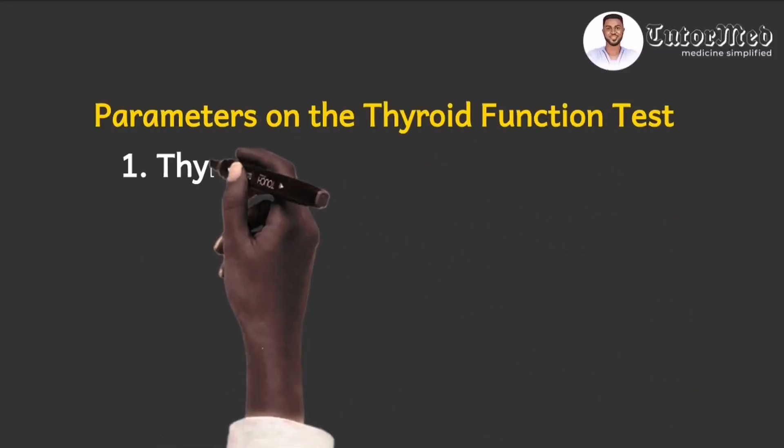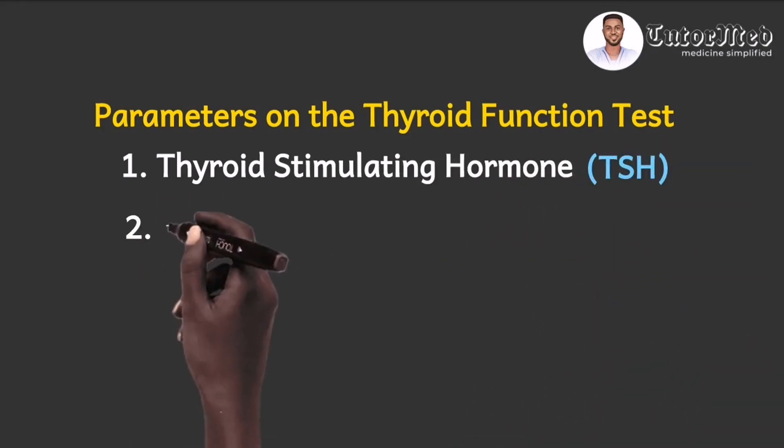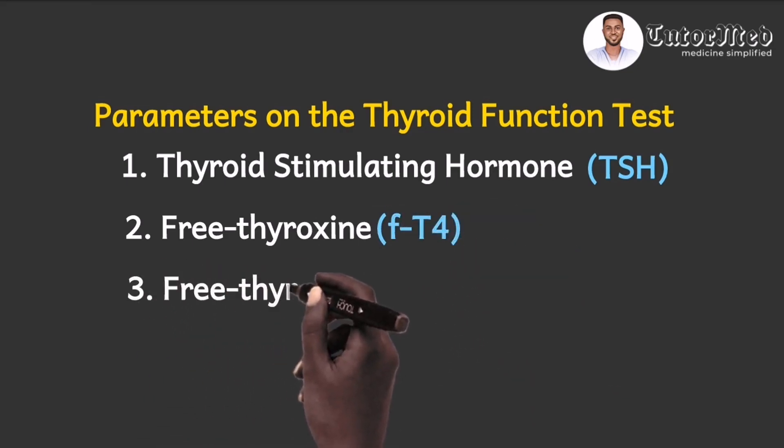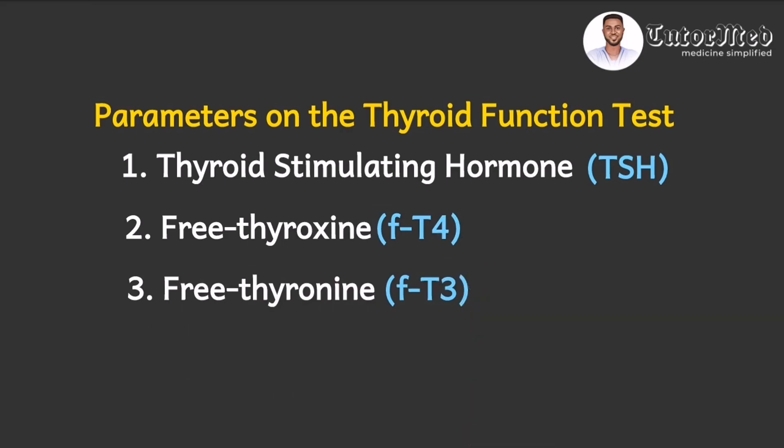Now let's look at the parameters reported on the thyroid function test. One might expect to see TRH, TSH, free T3, and free T4. However, there are only three parameters on the thyroid function test: the thyroid stimulating hormone (TSH), free thyroxine (FT4), and free triiodothyronine (FT3). TRH is not included on the thyroid function test report.